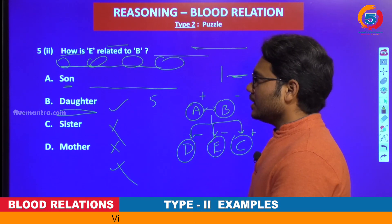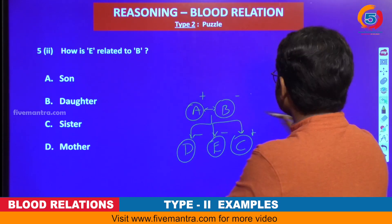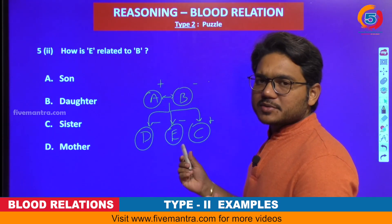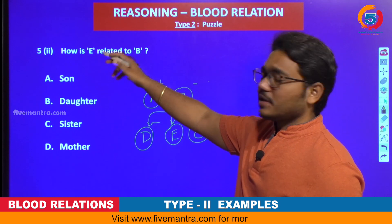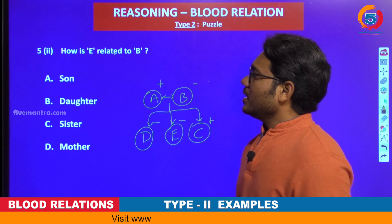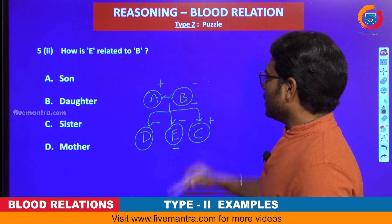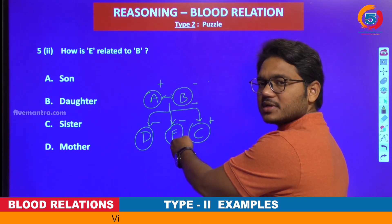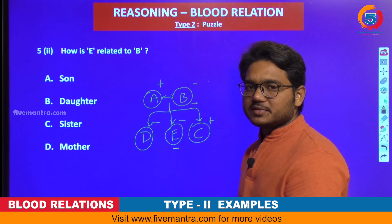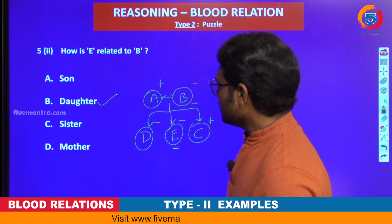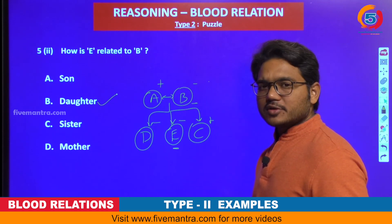An extension for this question is also given. For the same relationship tree we drew for the first question, we can find the answer for this second one. What is asked? How is E related to B? E is the daughter of B, being a female. So E is the daughter of B.